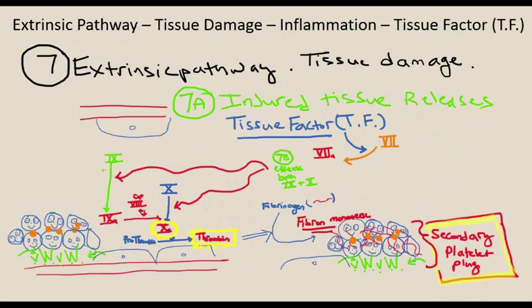The extrinsic pathway is initiated when there's tissue damage. The tissue releases tissue factor or TF, which activates factor 7, going through factors 9 and 10. Remember, factor 10, thrombus or thrombin, and fibrinogen are common in both extrinsic and intrinsic pathways.